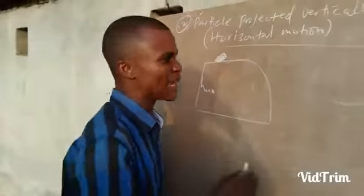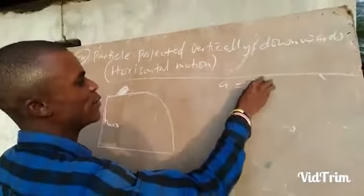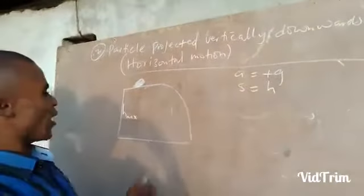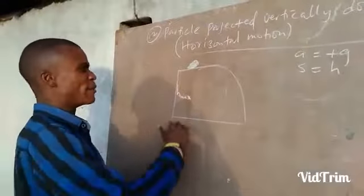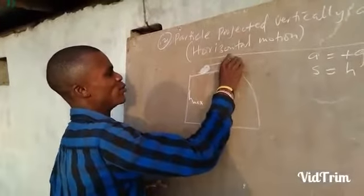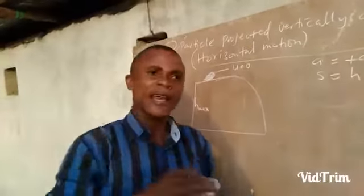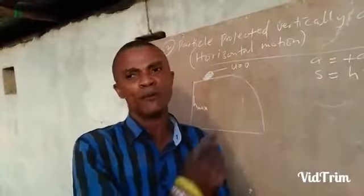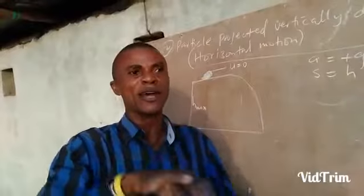Anytime the object is falling, A changes to positive G, and S also changes to H. Now, anytime the object is released, U is equal to zero at that point. In the other case we said V is equal to zero at the highest point, but wherever the object is released or dropped, U is equal to zero at that point.